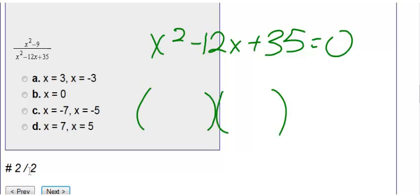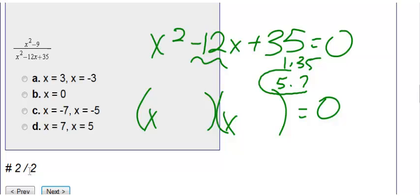Make it into my two parentheses, put an x and an x. My factors of 35 are 1 times 35 and 5 times 7. My goal is to get a negative 12. The only way for me to get a negative 12 is a 5 and a 7, where they both have to be negative. So negative 5, negative 7.